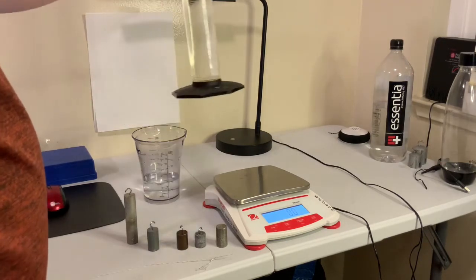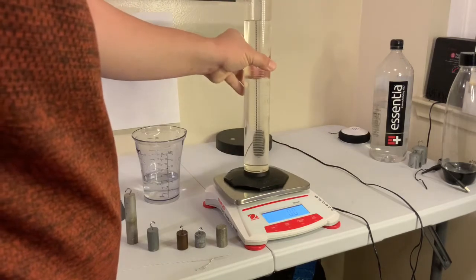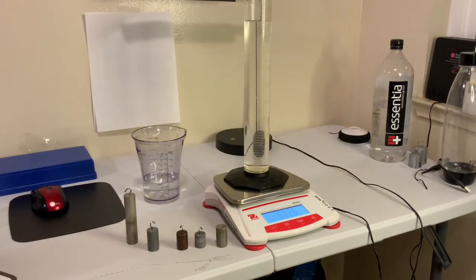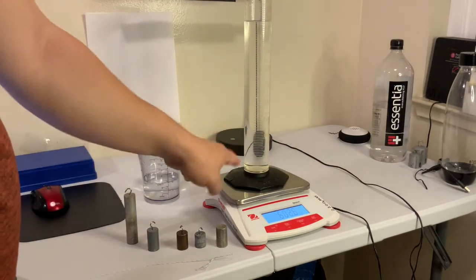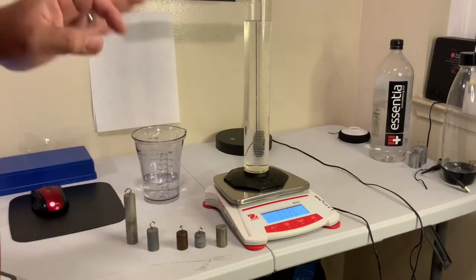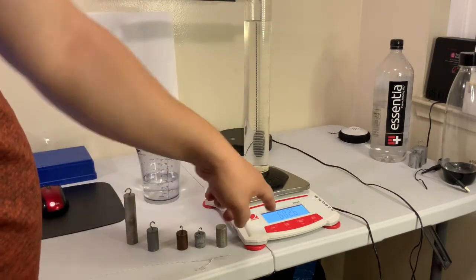So this will be placed onto here like so. So this is the mass of the graduated cylinder with the water inside the cylinder. It's given as this value here.